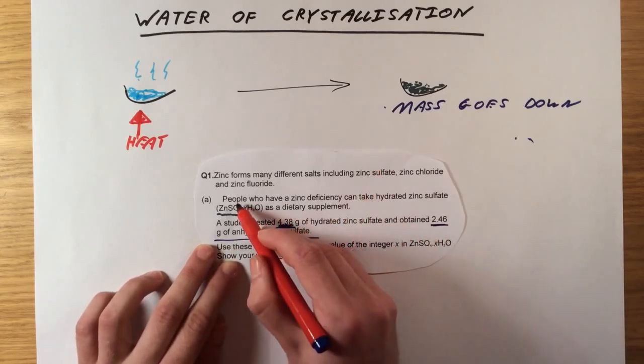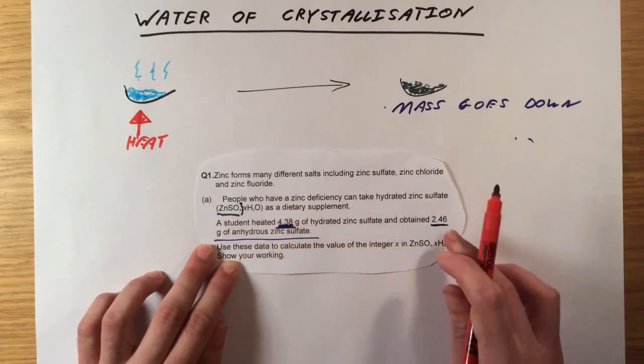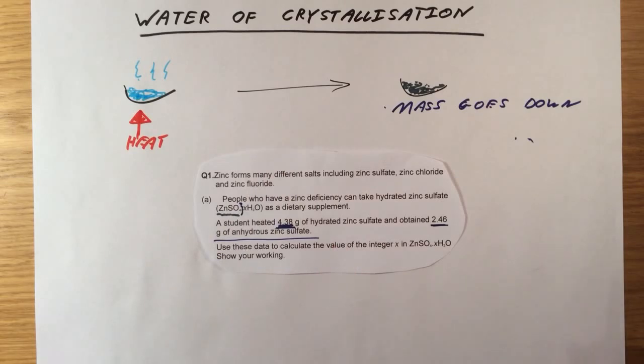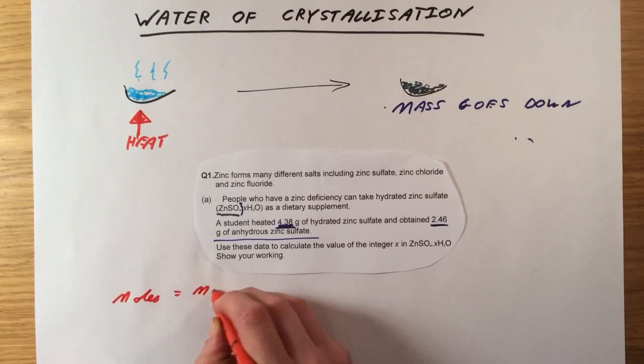If we evaporate all the water, we are just going to have ZnSO4 on its own with no water. So we can use that number there. So what we're going to do to start with is we're going to use our equation moles equals mass over MR.